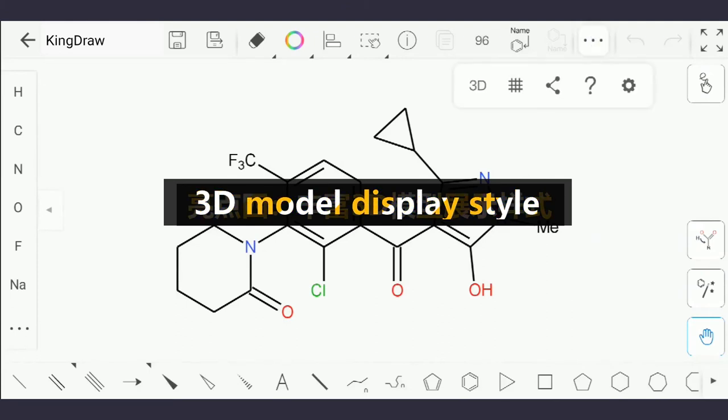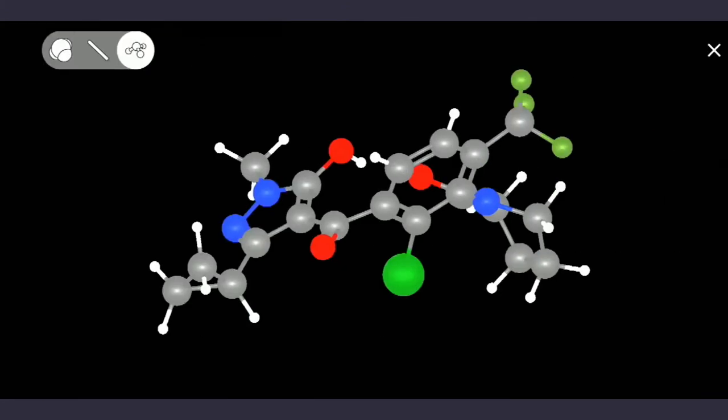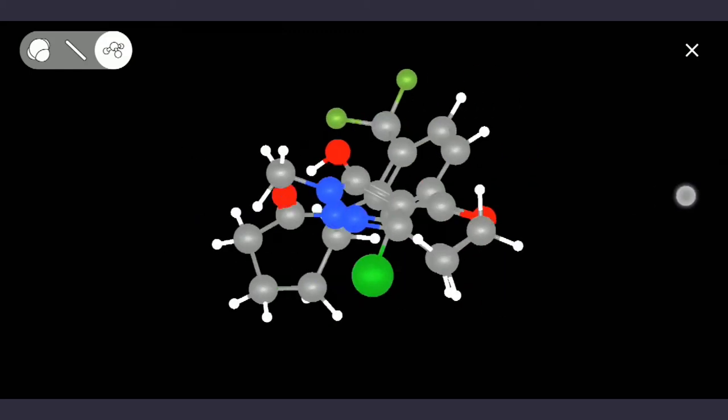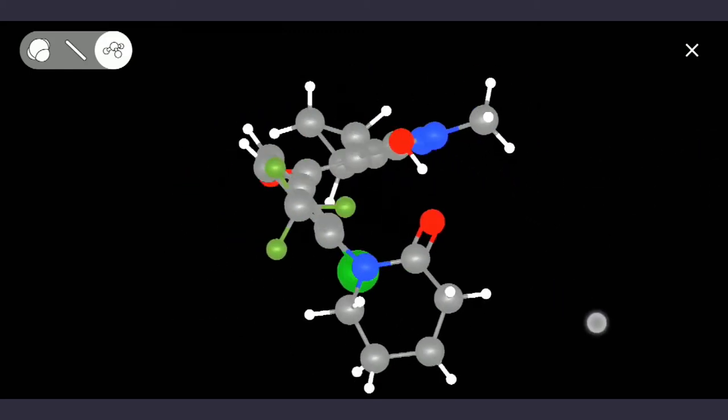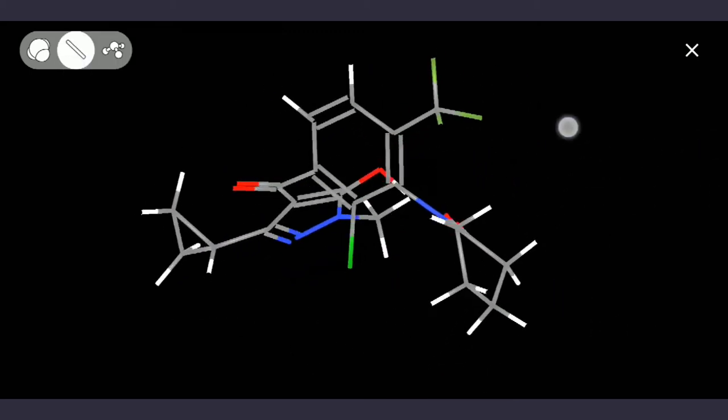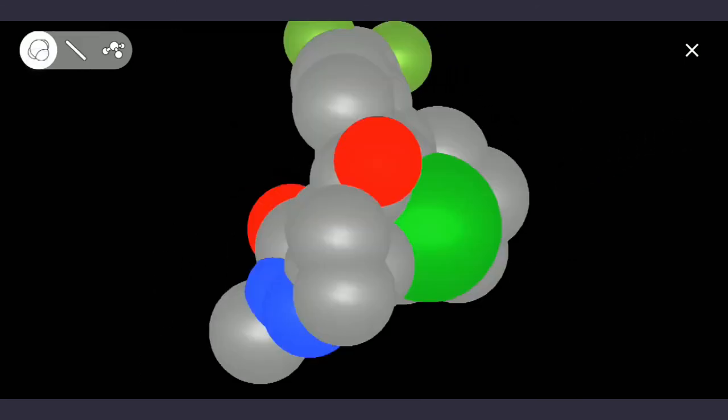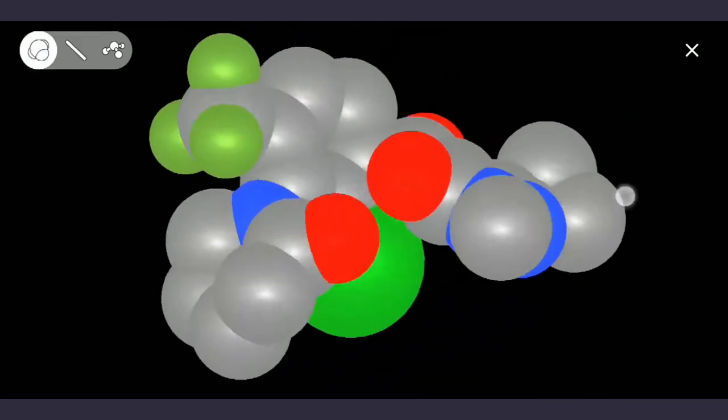Highlight 4. 3D model display style. On the base of the existing ball and stick model, the 3D model display has two more styles of space-filling model and stick model. Click the icon in the upper left corner to switch.